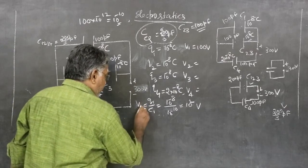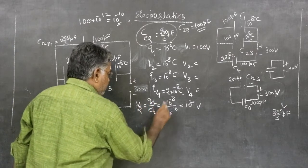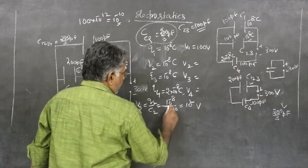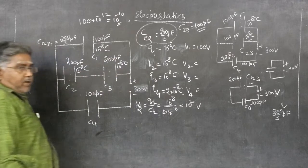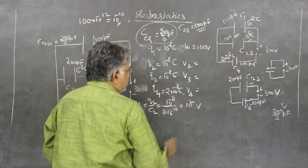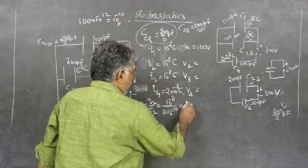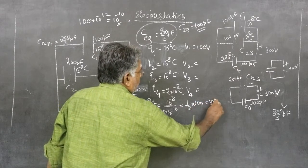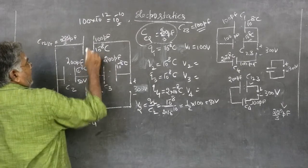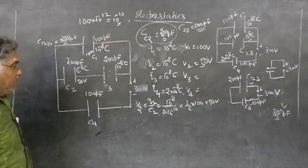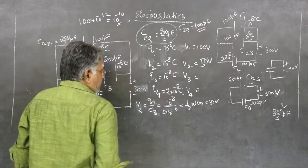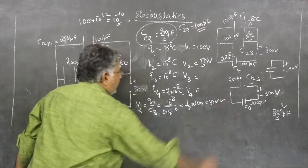V2 = Q2/C2 = 10⁻⁸ / (200 × 10⁻¹²) = 10⁻⁸ / (2 × 10⁻¹⁰) = ½ × 10² = 50 volt. So V2 = 50 volt. Similarly, V3 = Q3/C3 = 10⁻⁸ / (200 × 10⁻¹²) = 50 volt.